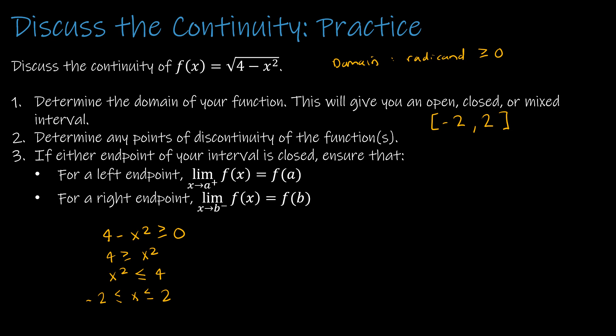Since both endpoints of the interval are closed, we need to check them. At the left endpoint, as I get closer and closer to negative 2 my radicand gets closer and closer to 0. And if I actually plug in negative 2, that gives me 0 — so the function value and the limit agree. The same thing happens when x equals 2: 4 minus 2 squared is 4 minus 4, which is 0, and the square root of 0 is 0. So our function and our limit are in fact the same.